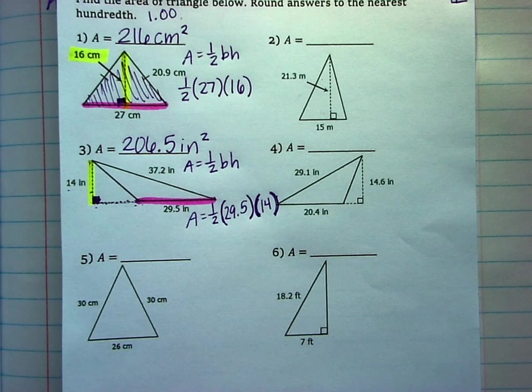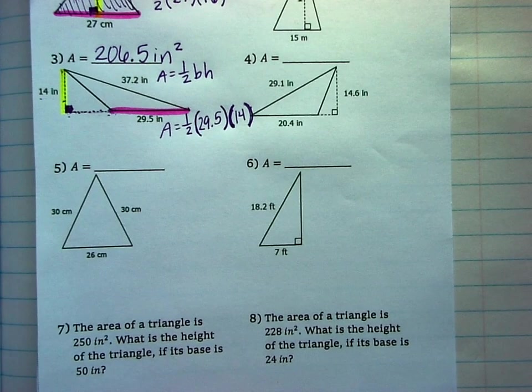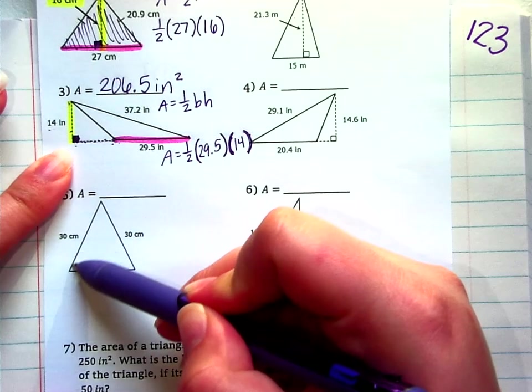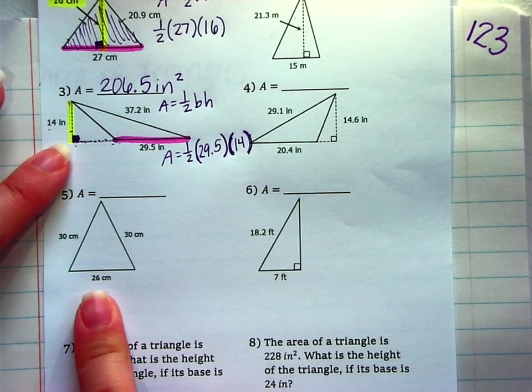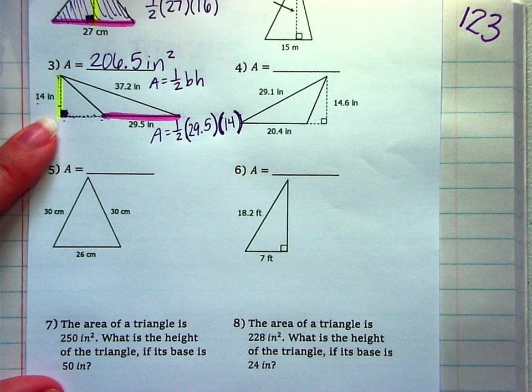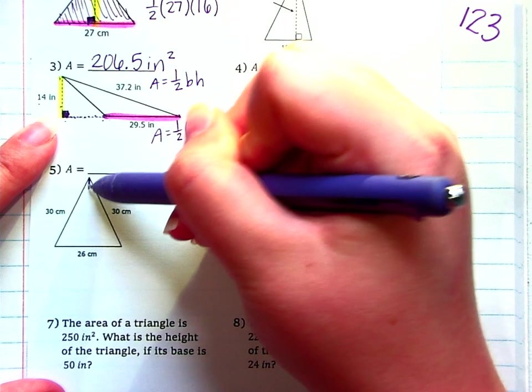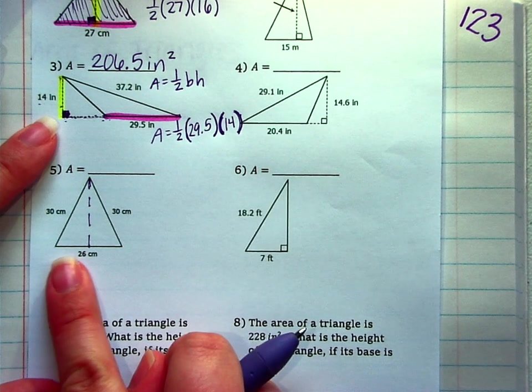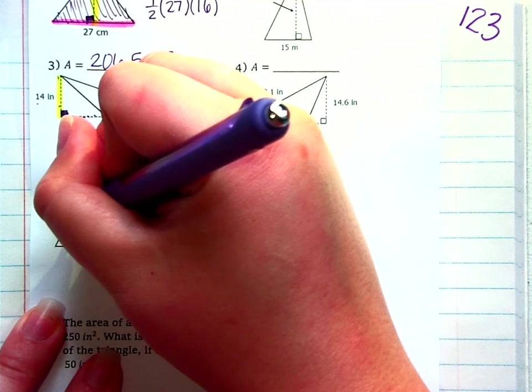All right. Five and six. There's something we need to do before we can do the area formula. So we have another isosceles triangle on number five. We know it's isosceles because 30 centimeters, 30 centimeters. There's two congruent sides. That means the base is 26. If you remember learning about isosceles triangles, the base is the side that's different than the other two, the legs. So with this, we can actually draw in the height. Since it's isosceles, if we're going from the vertex angle, the very top, and drawing in a height, what do you think that would do to this bottom side?